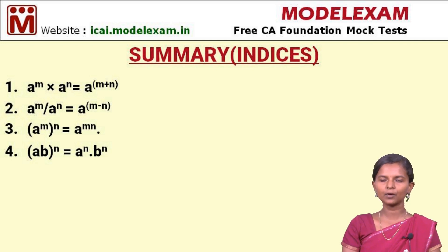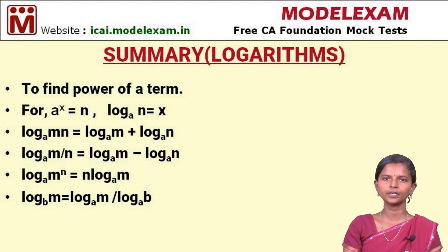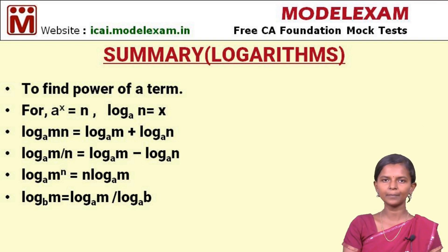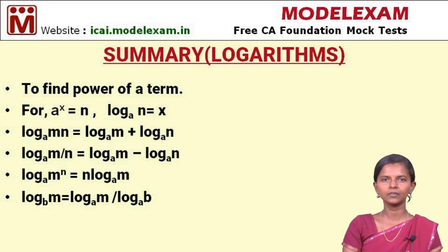The next one is the summary of logarithms. The first point is we use the concept of logarithm to find the power of a term. To find the value from a logarithmic value, we use the anti-logarithm concept. The general form is: if A power x equals N, then log N to the base A equals x. This is the general form in which we use logarithmic values.